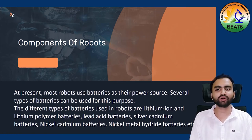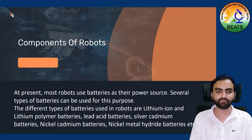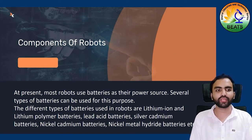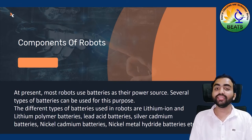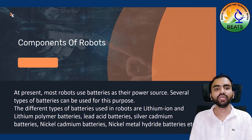The components of robots — this is also a very important part. The most important power source of the robot is the battery. Some types of batteries are: lithium-ion battery, polymer battery, and silver cadmium. I have made a detailed lecture on our Beats YouTube channel. You can see it there — it is also used in electric vehicles.